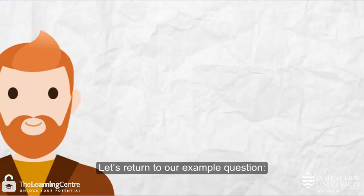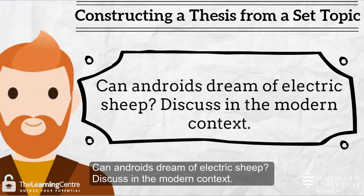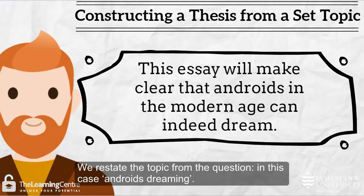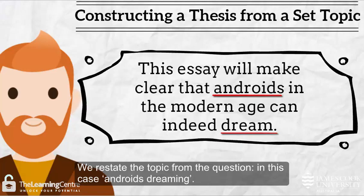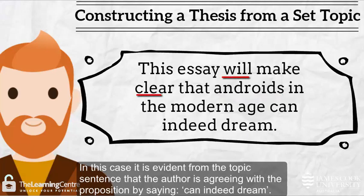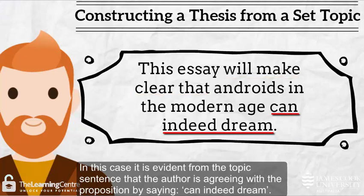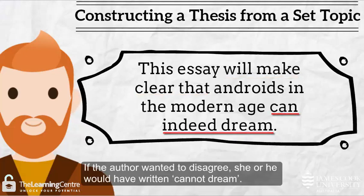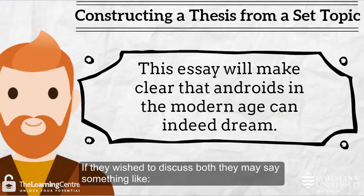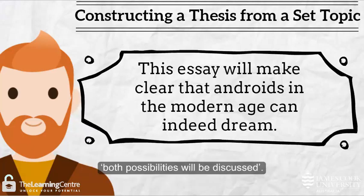Let's return to our example question: 'Can androids dream of electric sheep? Discuss in the modern context.' We restate the topic from the question — in this case, androids dreaming. We then make clear the direction of the paper. In this case it is evident that the author is agreeing with the proposition by saying they 'can indeed dream.' If the author wanted to disagree, she or he would have written 'cannot dream.' If they wish to discuss both, they may say something like 'both possibilities will be discussed.'